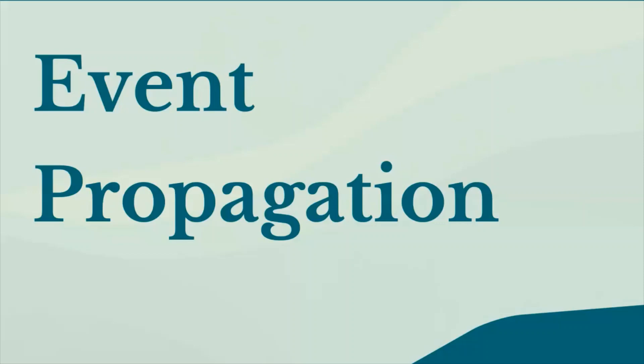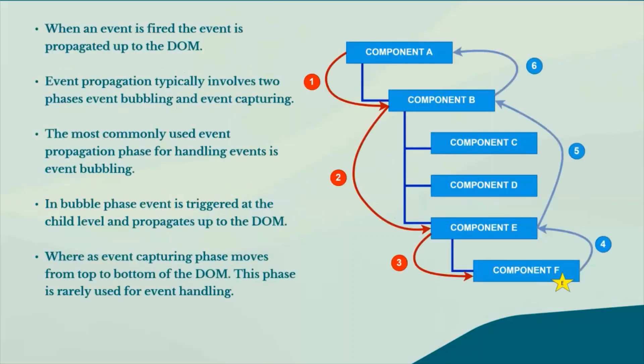When an event is fired, it propagates up the DOM — the Document Object Model. Event propagation typically involves two phases: the bubble phase and the capture phase. The most commonly used phase for handling events is event bubbling, or the bubble phase. This is the default phase.